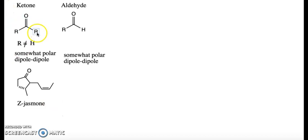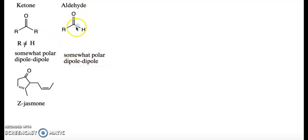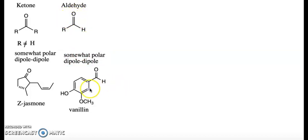When one of the R groups in a carbonyl is a hydrogen, we call the molecule an aldehyde. It has similar properties to the ketone in that it's somewhat polar due to dipole-dipole interactions between the carbon and oxygen. An example is vanillin, which is responsible for the flavor of vanilla.